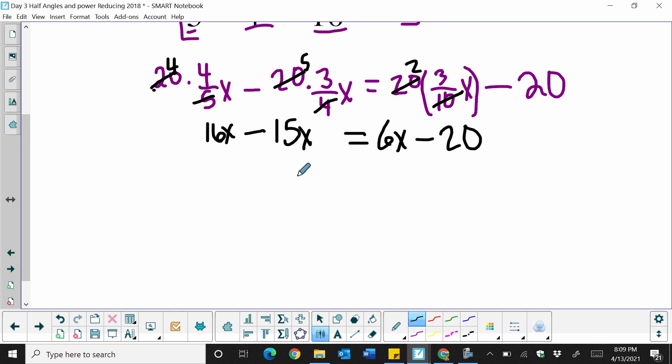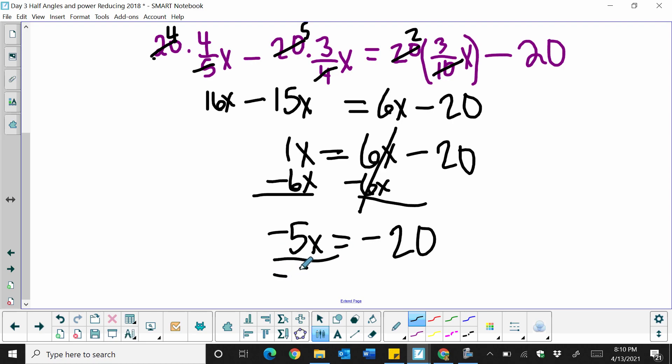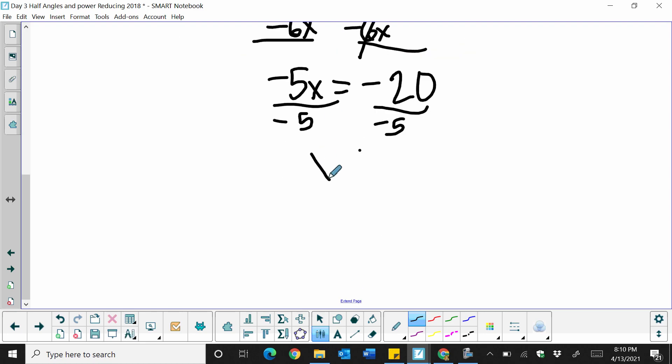16 minus 15 is just 1x or x. So the left side simplifies to simply x is equal to 6x minus 20. Now we need to combine our like terms. So let's move the 6x over by subtracting it. These cancel and I'm left with 1 minus 6, which is negative 5, is equal to, bring down the constant, negative 20. Don't forget to bring down the negative. Once you get to here, we need to solve for x. So we need to divide as our last step. So divide by the coefficient, negative 5. So our final answer is x is equal to, double negative, 20 divided by 5 is 4. So there's our final answer.